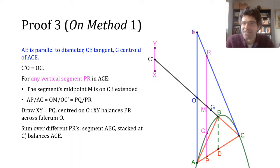Now, since the centre of mass of the triangle is a third of the way along OC, we again get that to balance it, the parabolic segment has to be a third of the size of triangle ACE.